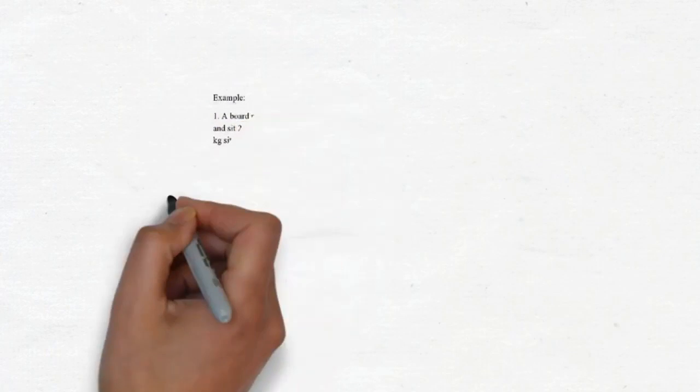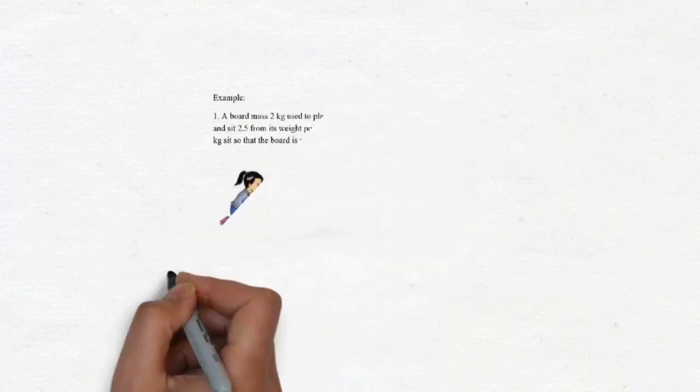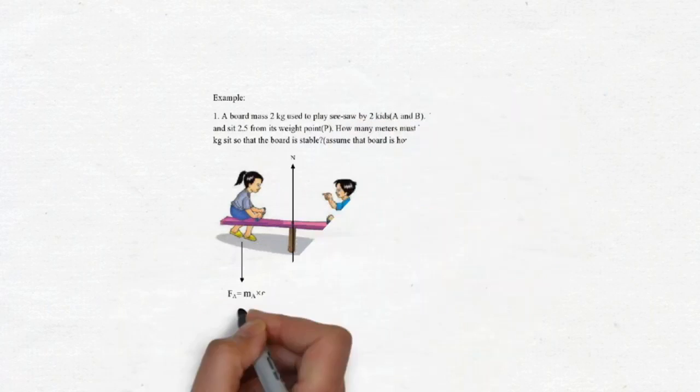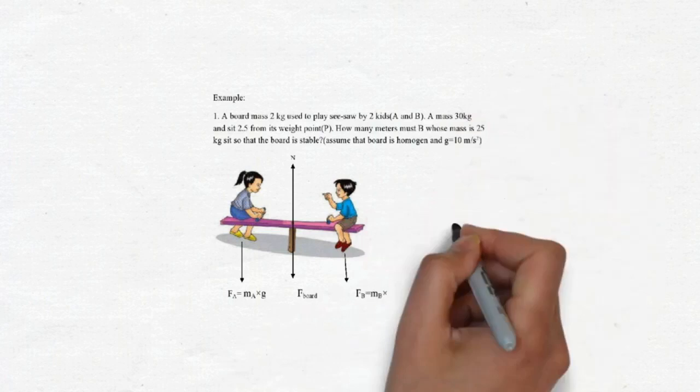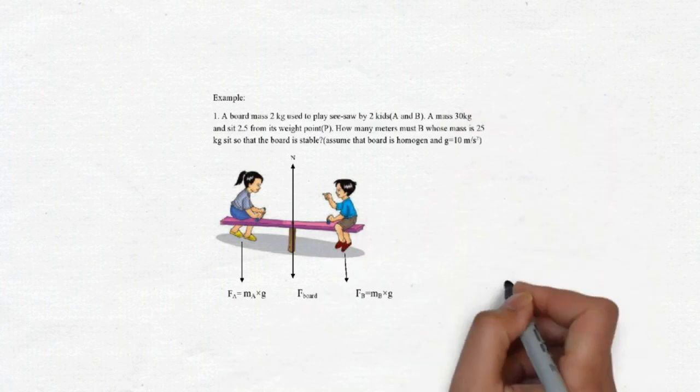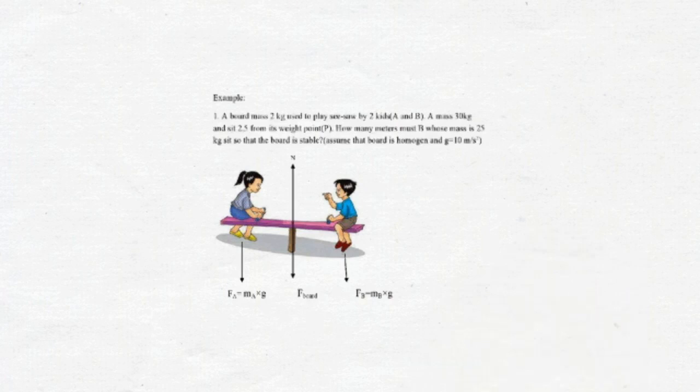Here's an example of one question. A bird mass 2kg used to play seesaw by two kids, A and B. A mass 30kg and sit 2.5m from the center point. How many meters must be, whose mass is 25kg, sit so that the bird is stable. So, and we can assume that the bird is homogen and the g is 10m per second squared.